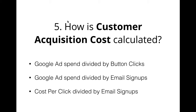Customer acquisition cost is the cost of acquiring a single customer. If you look at the different options, we have a couple of different terms: button clicks and email signups, and Google ad spend and cost per click. Button clicks is when someone clicks on the buy now button but doesn't sign up. Email signup is when someone clicks the button and then signs up. Google ad spend is how much we spent on our ad. Cost per click is how much we spent on a single click.